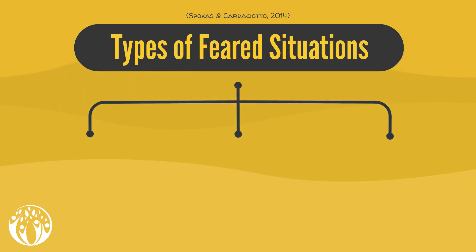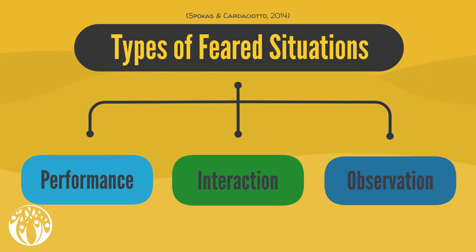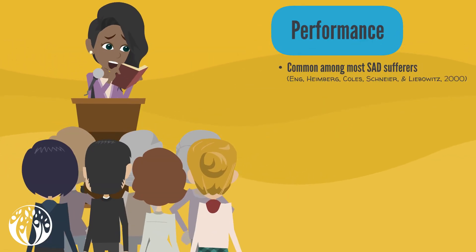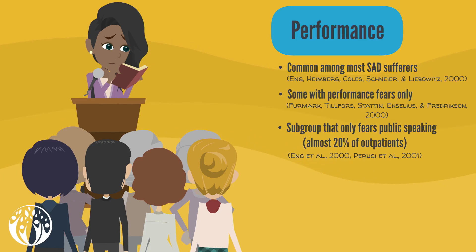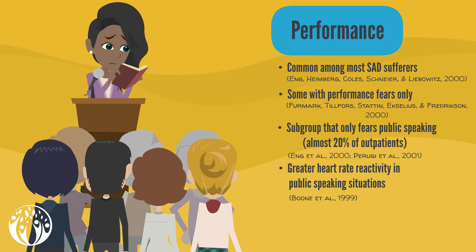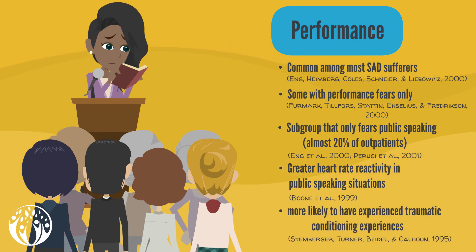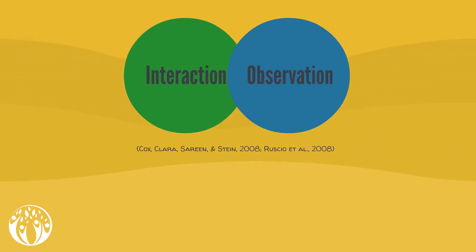Another suggestion for discriminating SAD sufferers is based on the type of situation they fear. The situations can be divided into three groups: performance situations, interaction situations, and observation situations. Being afraid of performance situations is very common among people suffering from SAD, and some actually only fear situations related to performance. In fact, around 20 percent of outpatients account for a subgroup that only fears public speaking. People with specific performance fears tend to show a greater heart rate reactivity in public speaking scenarios than other SAD sufferers and are more likely to have experienced traumatic conditioning experiences.